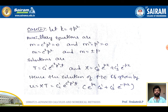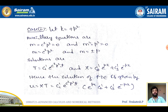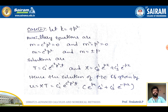Case 2: k = +p². The auxiliary equation for T gives m − c²p² = 0, so m = c²p², and T = c₁e^(c²p²t). For X, m² − p² = 0 gives m = ±p, so X = c₂e^(px) + c₃e^(−px). Therefore u = c₁e^(c²p²t) · (c₂e^(px) + c₃e^(−px)).